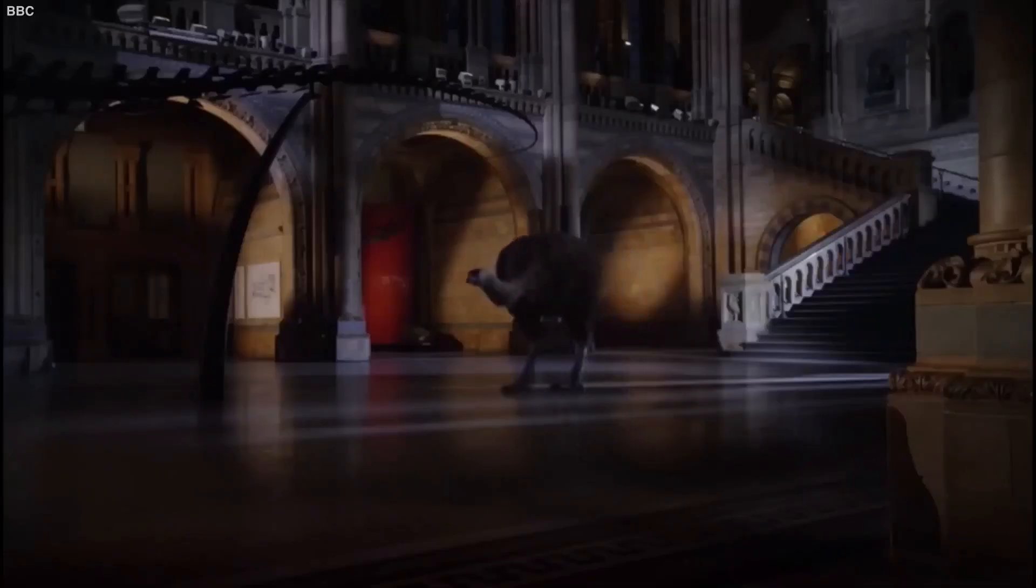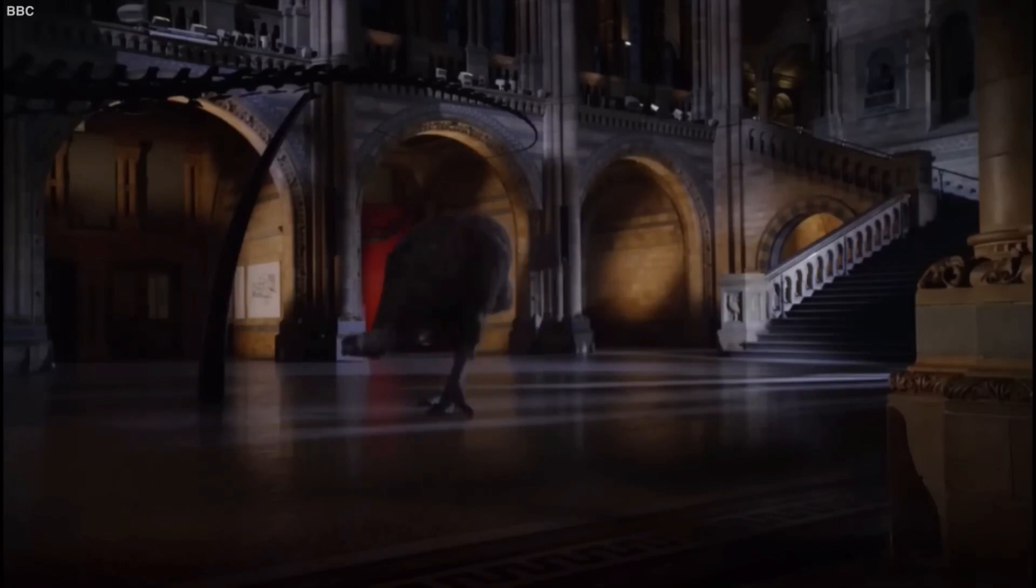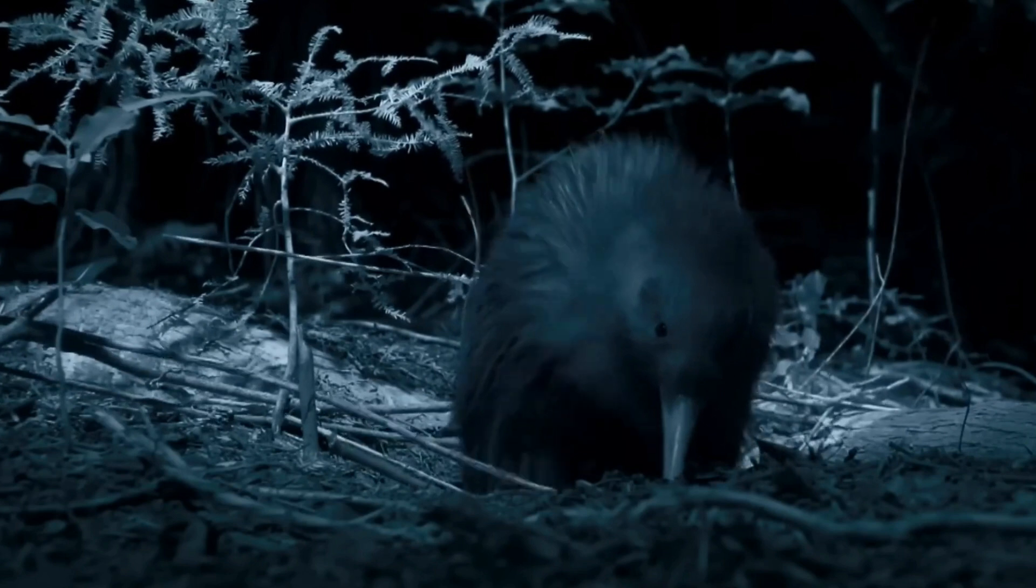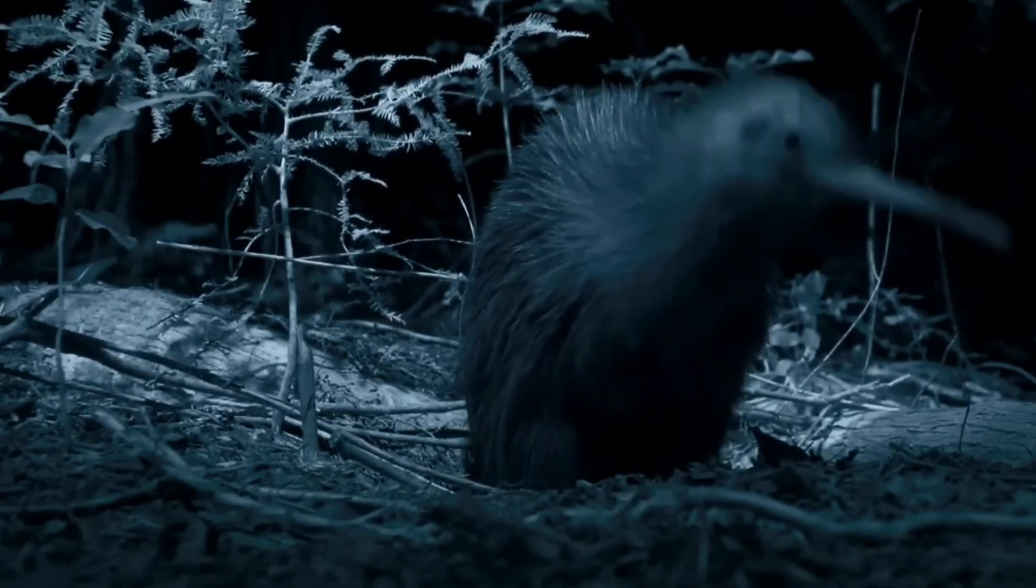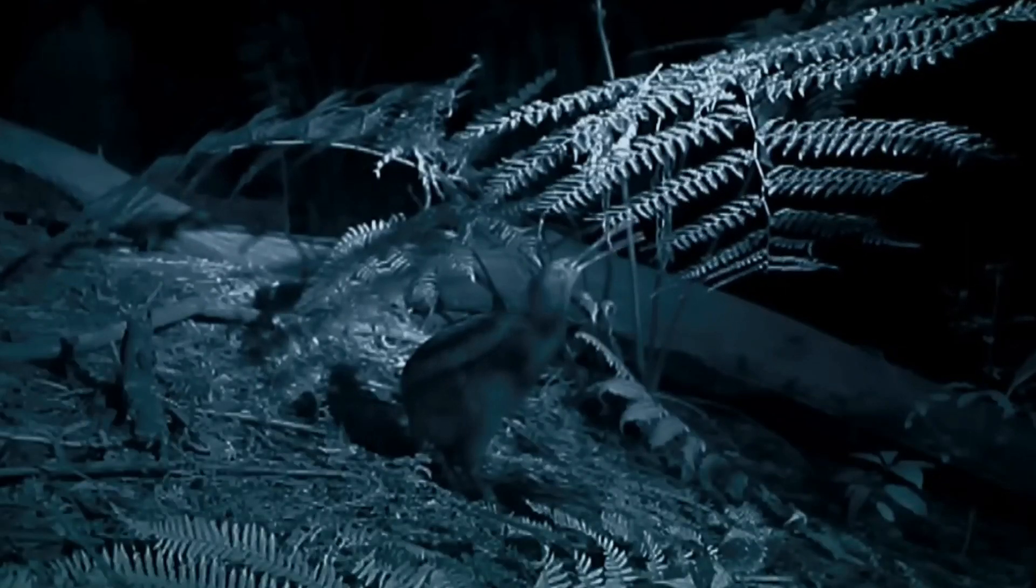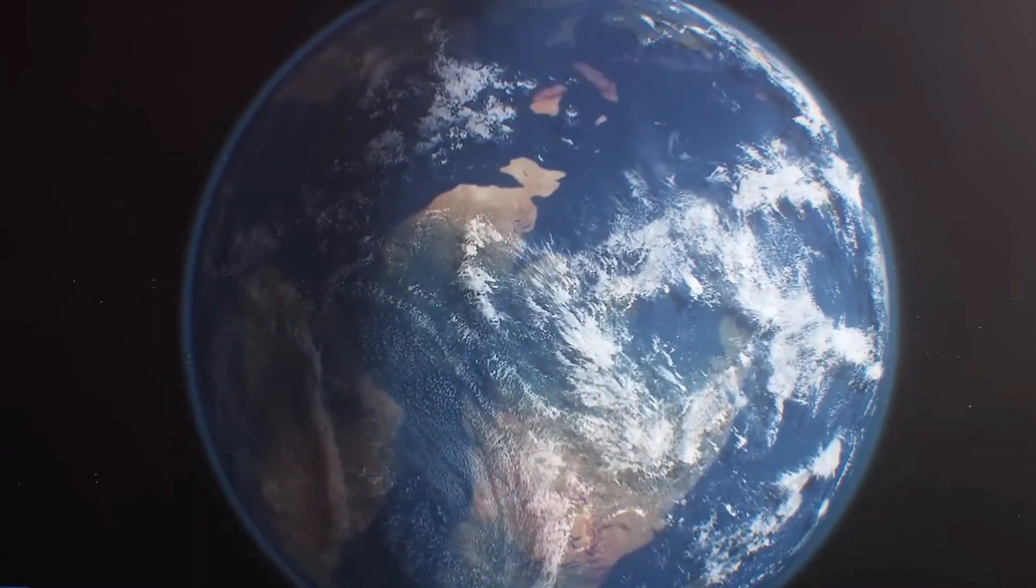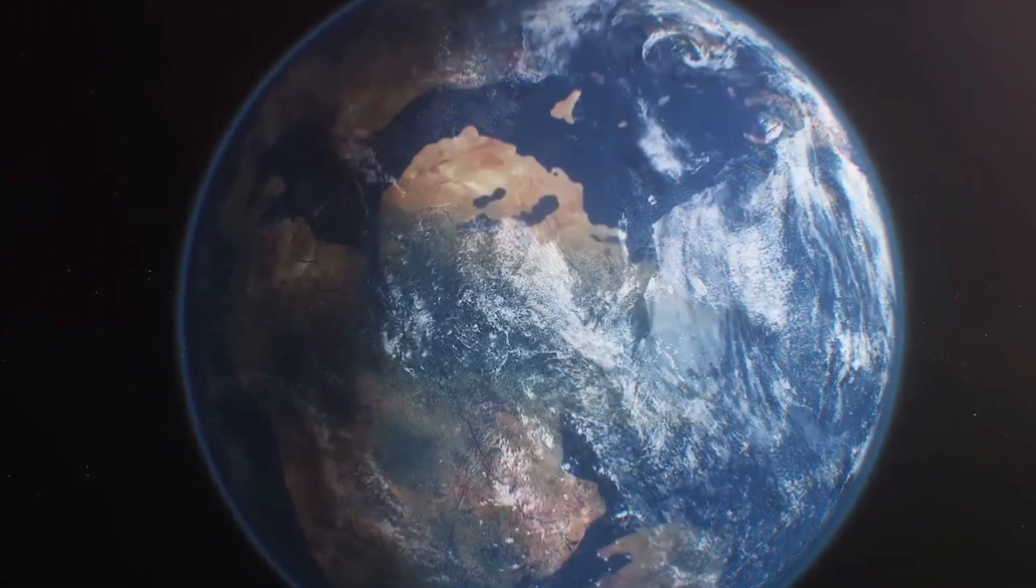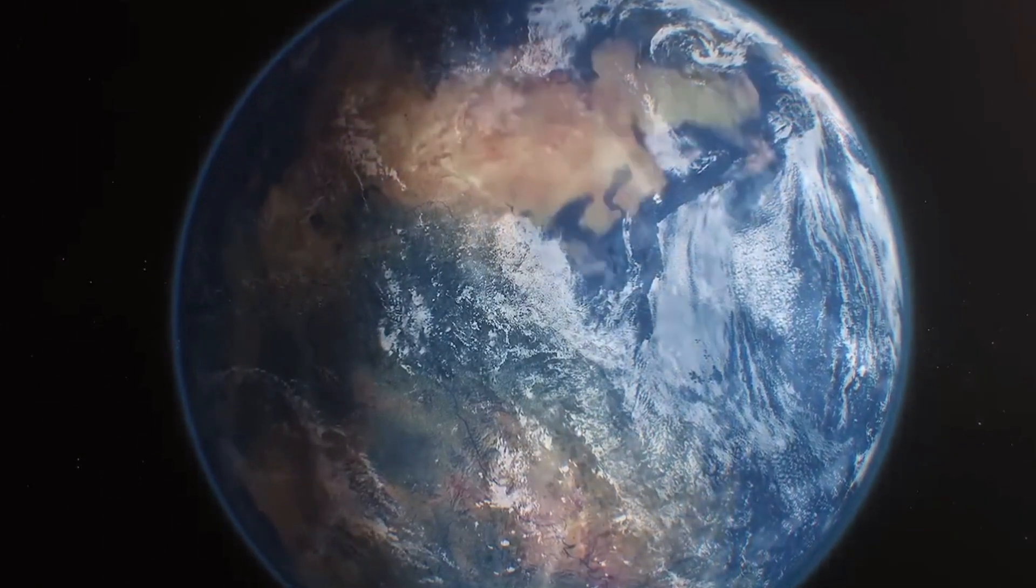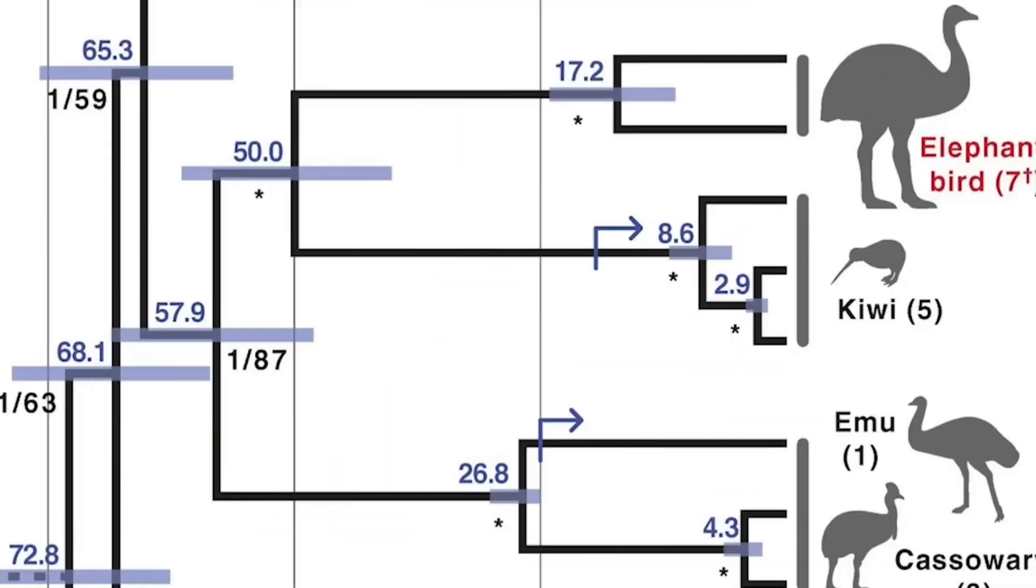Oddly, the closest relative of the kiwi, a clumsy flightless bird with whiskers and feathers that resemble hair, isn't thought to be the moa, which belonged to the same group as ratites and lived on the same island until it went extinct 500 years ago. Scientists now suspect that both species are descended from a single ancestor that lived on Gondwana and that their nearest relative is the bigger elephant bird, which stalked Madagascar's woods up until 800 years ago.